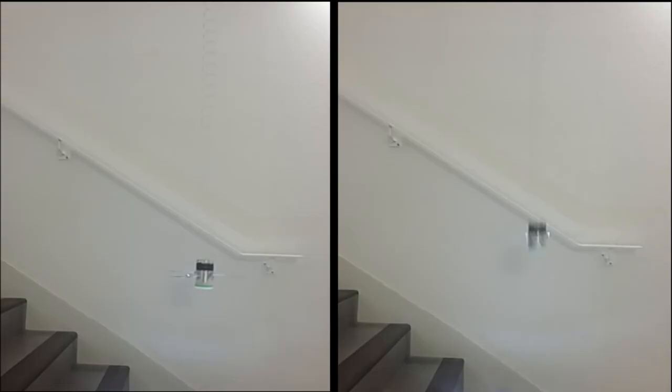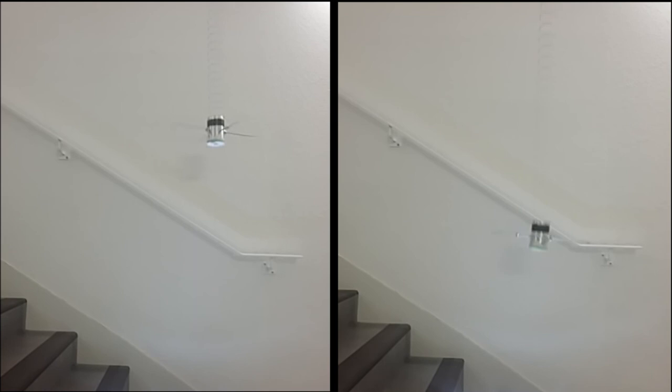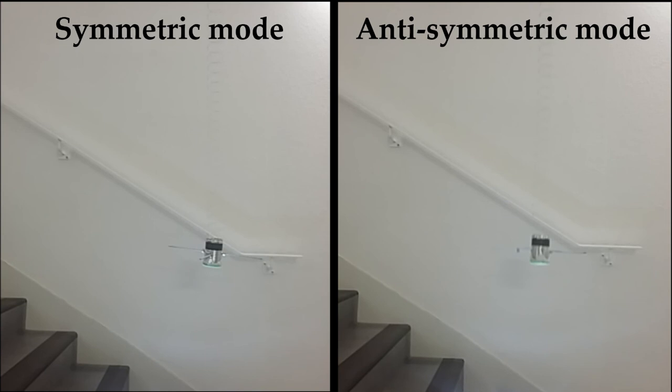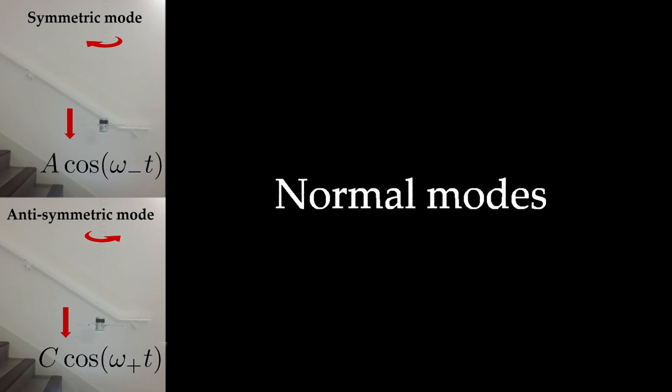One important thing to know is that there exist two particular modes of oscillation, which we chose to name symmetric and anti-symmetric modes. The symmetric mode follows the natural way the spring turns, and in the anti-symmetric mode, the spring turns the other way. They can be seen by imposing at the beginning of the experience particular initial conditions.